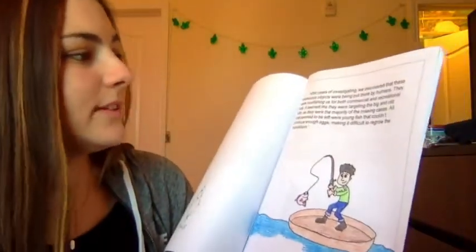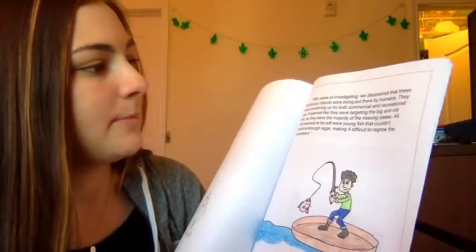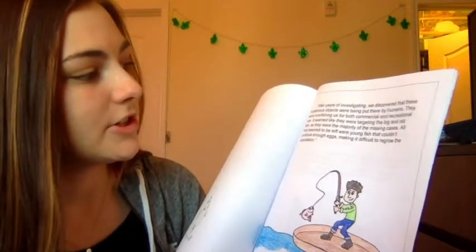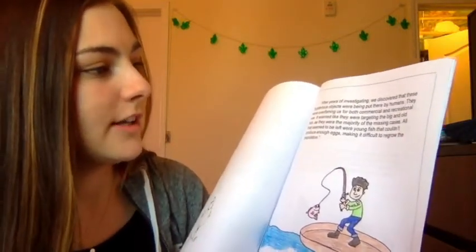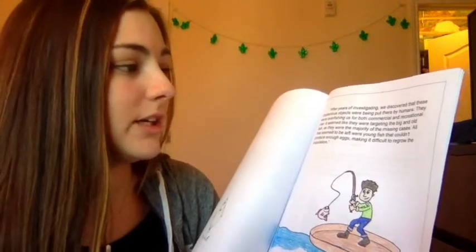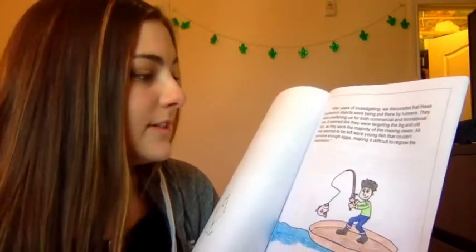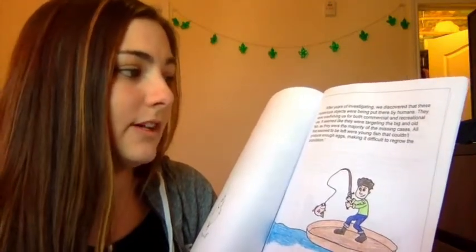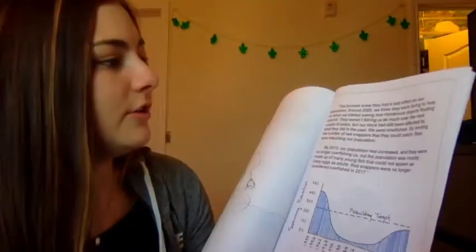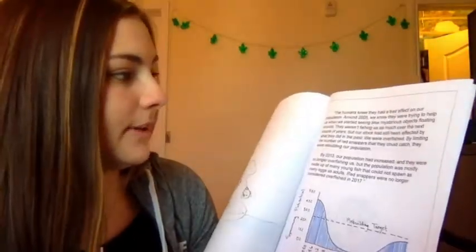After years of investigating, we discovered that these mysterious objects were being put there by humans. They were overfishing us for both commercial and recreational use. It seemed like they were targeting the big and old fish as they were the majority of the missing cases. All that seemed to be left were young fish that couldn't produce enough eggs, making it very difficult to regrow the population.